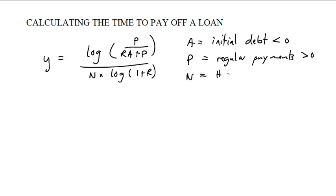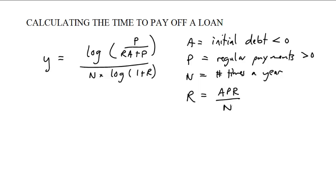n is the number of times a year you make payments. Usually we pay off debts monthly, but you could also use daily or weekly payments. r is the APR written as a decimal, divided by n. Again, we usually divide by 12, but not always.